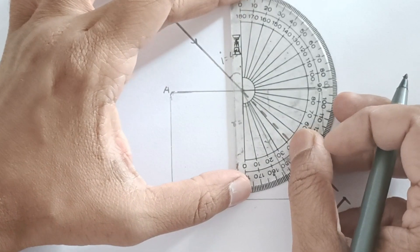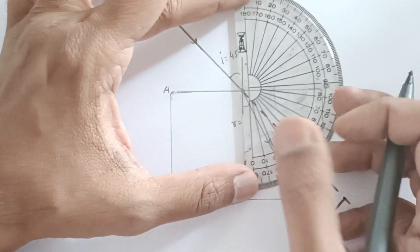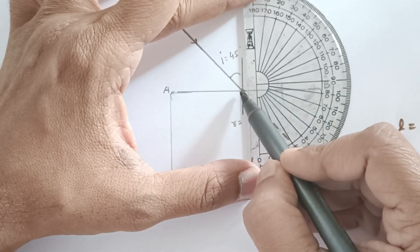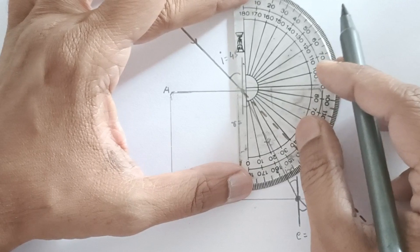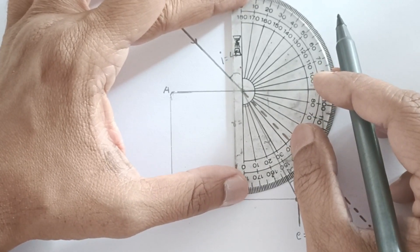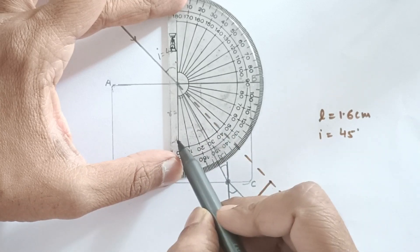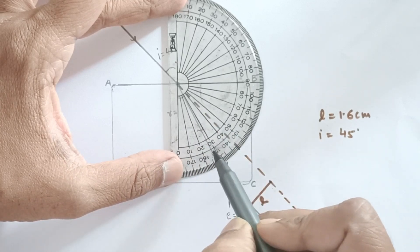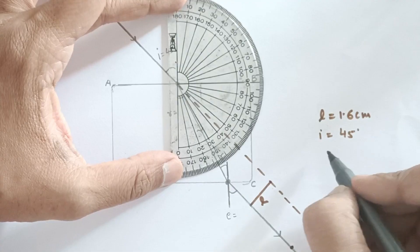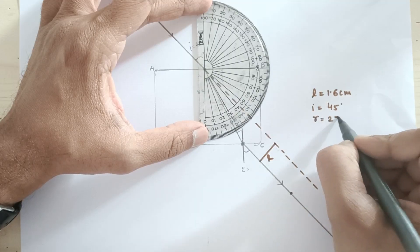Let's measure the angle of refraction. Make sure that this point matches with this point and this line matches with the normal. The angle of emergence must be equal to the angle of incidence. However, error of about 2 degrees is always allowed in the experiment.